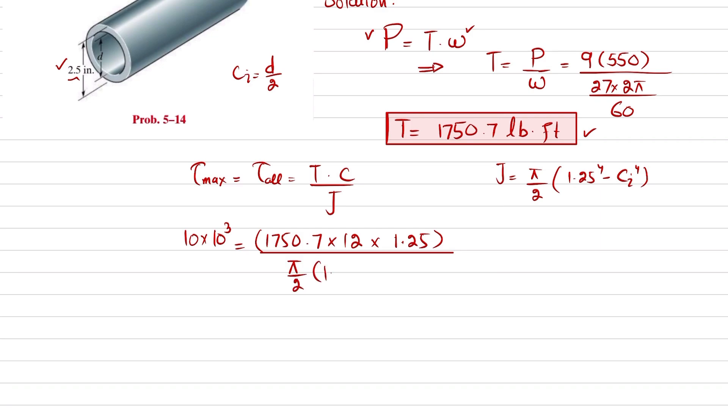That will be 1.25 divided by J, and this J is π/2 times 1.25 to the power 4 minus c_i to the power 4. Now this is very simple. You can calculate c_i. When you calculate, it will be 0.9366 inches.